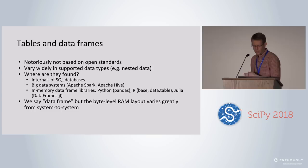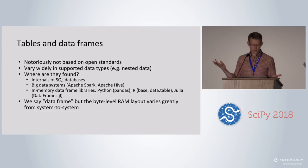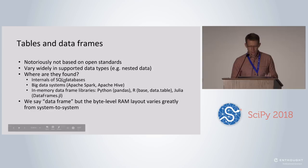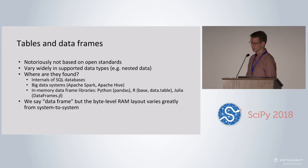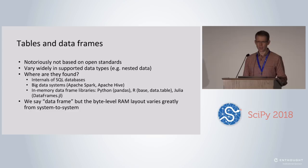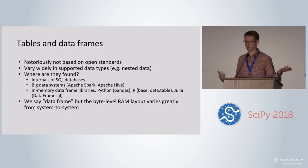Looking across the ecosystem, there are no open standards — or at least there were no open standards — for tabular data. Different implementations of tables exist inside SQL databases, inside big data systems with their own memory formats. In Pandas we have our own, R has its own, Julia has its own. These things which semantically we call data frames — you write df.column_name and get a column — but the way the bytes are represented in DRAM is different. So if an R programmer writes an algorithm against an R data frame, you can't take that code and run it against a Pandas data frame, except in very rare cases.